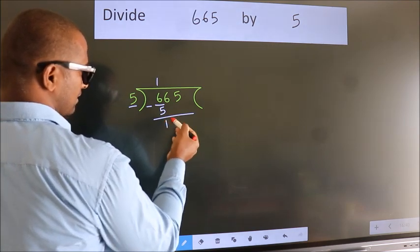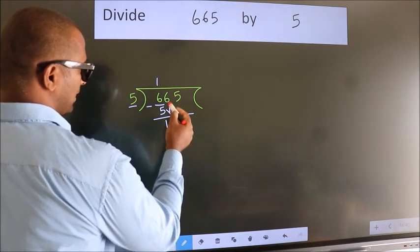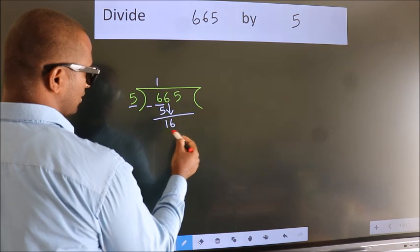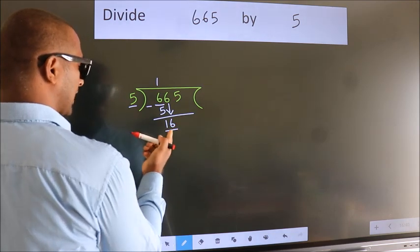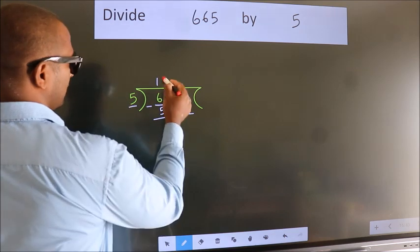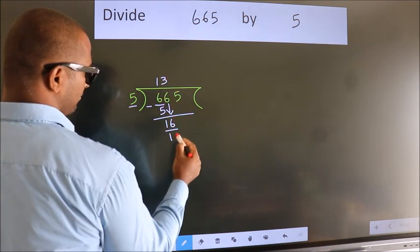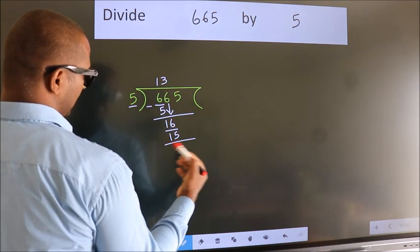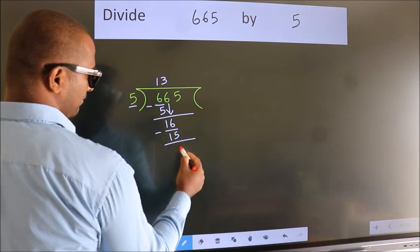After this, bring down the next number. So 6 down. So 16. A number close to 16 in the 5 table is 5 times 3 is 15. Now we subtract. We get 1.